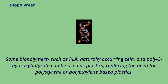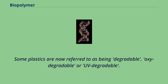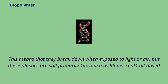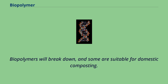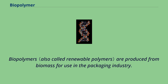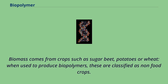Some biopolymers such as PLA, naturally occurring zein, and poly-3-hydroxybutyrate can be used as plastics, replacing the need for polystyrene or polyethylene-based plastics. Some plastics are now referred to as being degradable, oxo-degradable, or UV degradable, meaning that they break down when exposed to light or air, but these plastics are still primarily oil-based and are not currently certified as biodegradable under the European Union Directive on Packaging and Packaging Waste. Biopolymers will break down, and some are suitable for domestic composting. Biopolymers are produced from biomass for use in the packaging industry. Biomass comes from crops such as sugar beet, potatoes, or wheat. When used to produce biopolymers, these are classified as non-food crops.